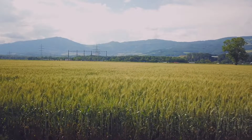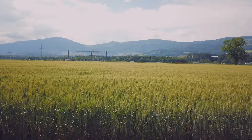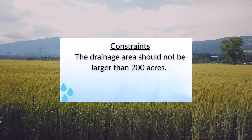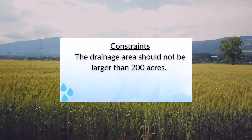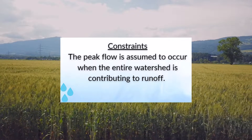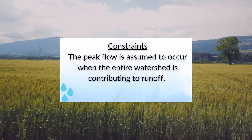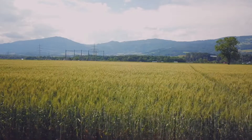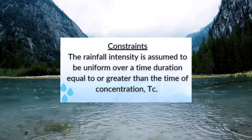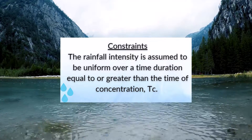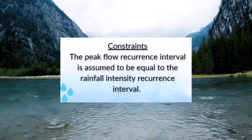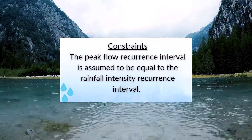It must be noted that the rational method has some natural limitations. First, the drainage area cannot be larger than 200 acres for this equation to be accurate. The peak flow is assumed to occur when the entire watershed is contributing runoff. The rainfall intensity is assumed to be uniform over a time duration equal to or greater than the time of concentration T sub C. The peak flow recurrence interval is assumed to be equal to the rainfall intensity recurrence interval.